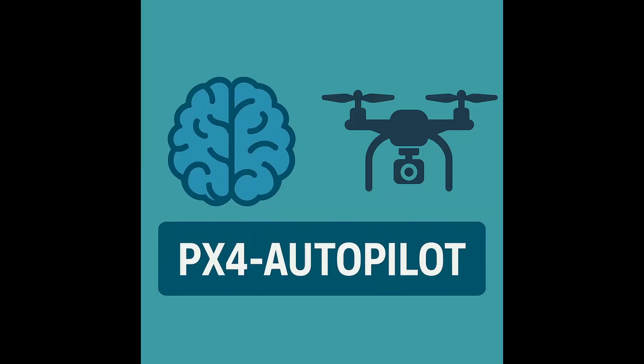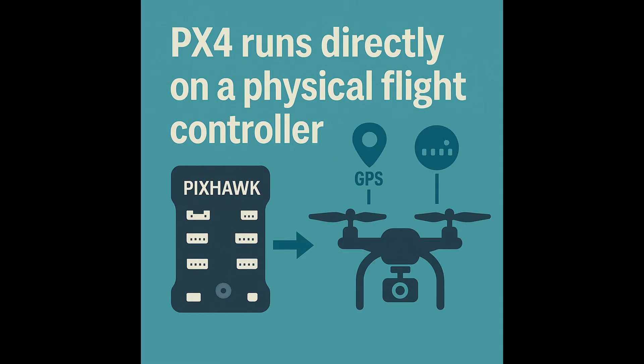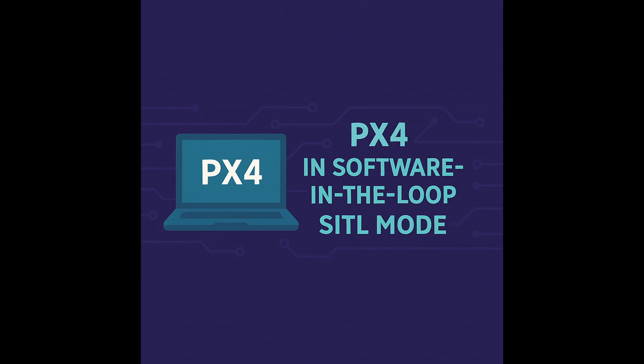Before we jump into running the simulation, it's important to understand what PX4 Autopilot actually is and why we are using it. PX4 Autopilot is an open-source flight controller software — basically, it's the brain of the drone. In the real world, PX4 runs directly on physical flight controllers like a Pixhawk, and it's responsible for keeping the drone stable, reading sensor data like GPS and IMU, and executing flight commands like takeoff, land, or fly to a waypoint. What's amazing is that PX4 can also run in simulation mode on your computer without any hardware — that's what we will be using today: PX4 in Software In The Loop, or SITL mode. This lets us test and develop complex autonomous behaviors like path planning.